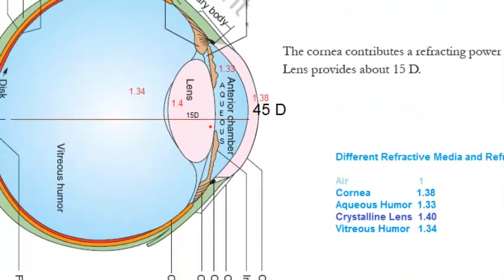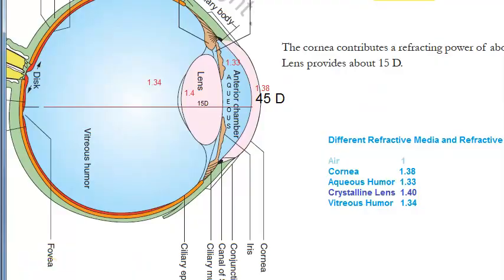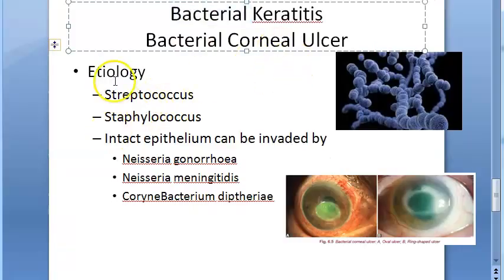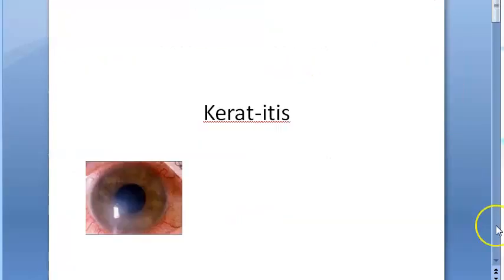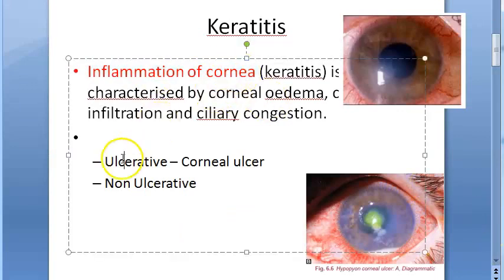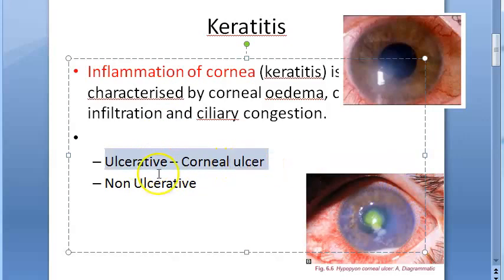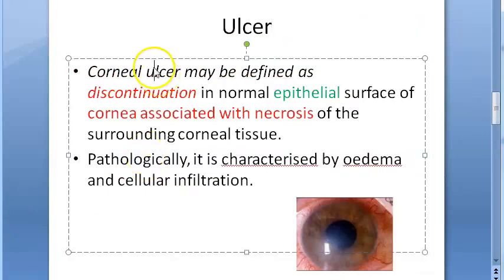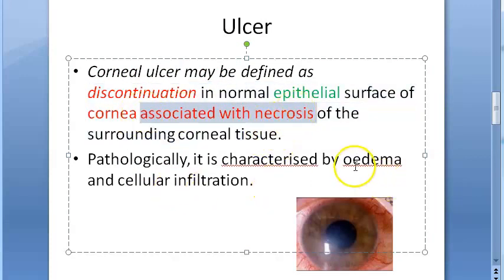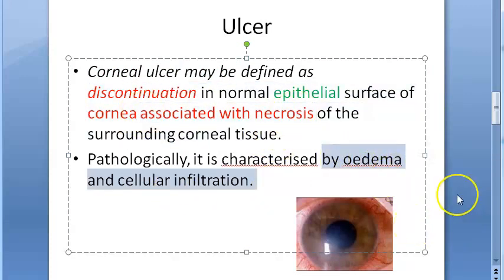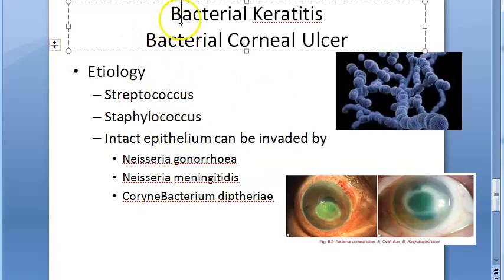All this can lead to keratitis, and keratitis will lead to ulcer. Keratitis is inflammation of the cornea — it can be ulcerative or non-ulcerative. Usually bacterial keratitis will be ulcerative, becoming a bacterial corneal ulcer. An ulcer is a discontinuity in the normal epithelial surface with underlying necrosis. Microscopically you will see edema and cellular infiltration.